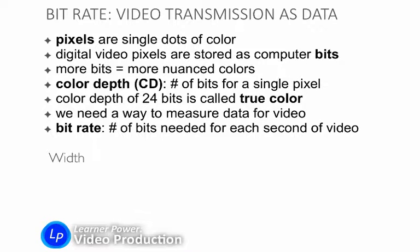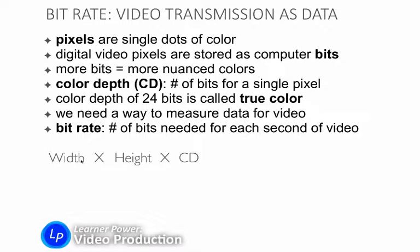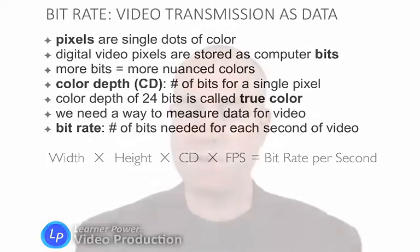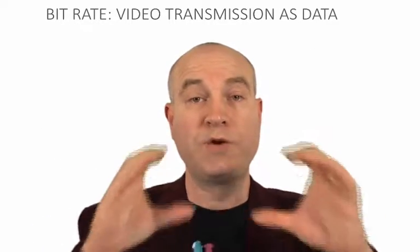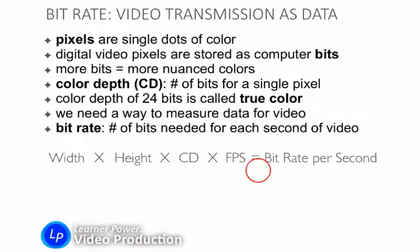The formula starts with the width of the screen multiplied by the height — so width times height in pixels — multiplied by the color depth (CD), which is how many bits we need for each pixel. So: the number of pixels in the width, times the number of pixels in the height, times the number of bits of data needed for each pixel, times the frame rate — the number of frames per second. When we multiply all those numbers together, we get the bit rate per second, telling us how many bits we need for one second of that video.